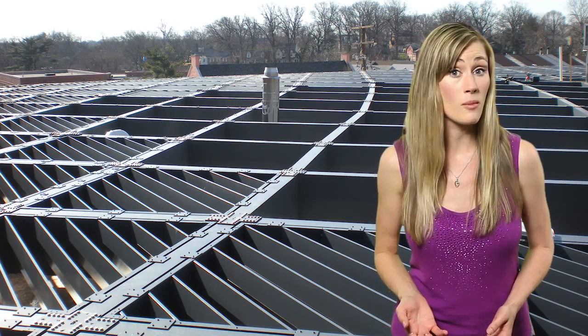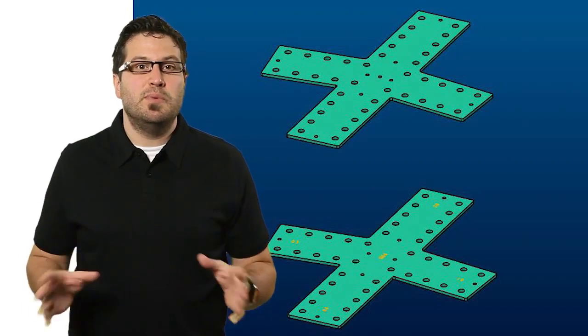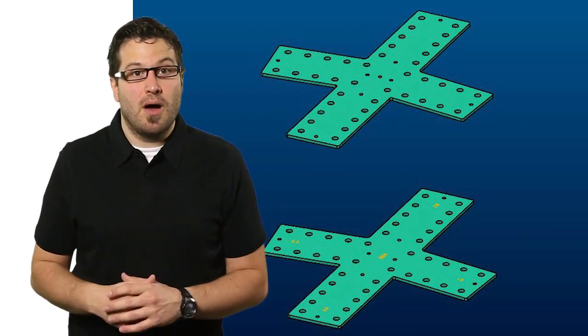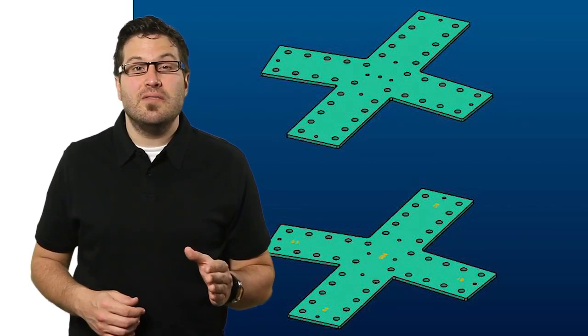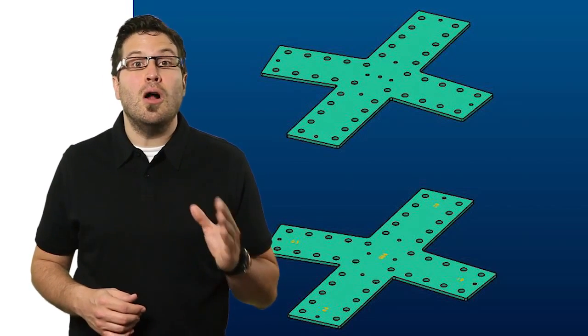Designing each hub individually would have taken longer than it takes a Twinkie to grow mold. To make sure the canopy was built before the release of Fast and Furious 18, Michael and his team created a smart model of the hub that compensated for the slope of the structure along all of its axes.